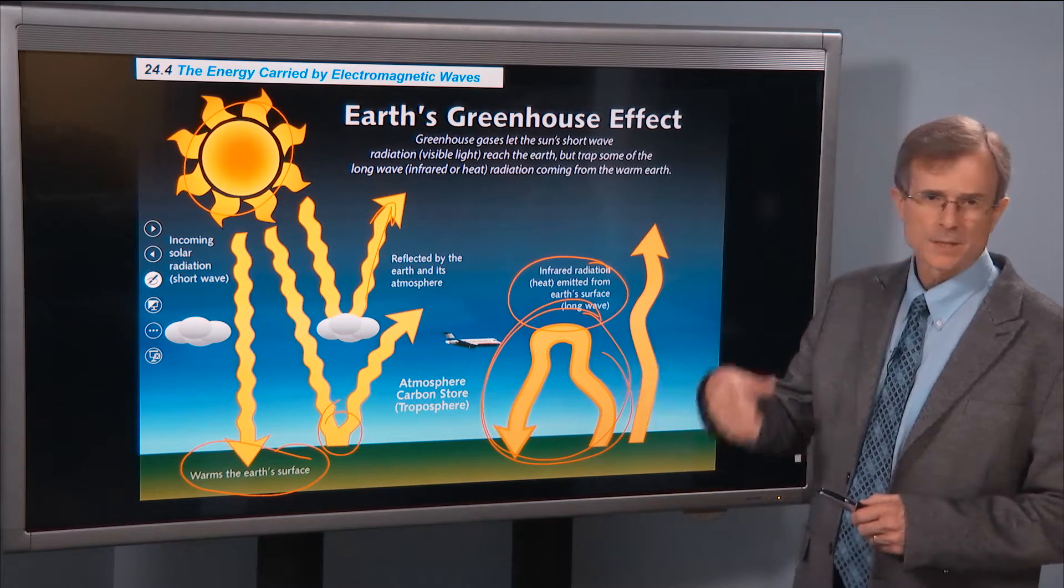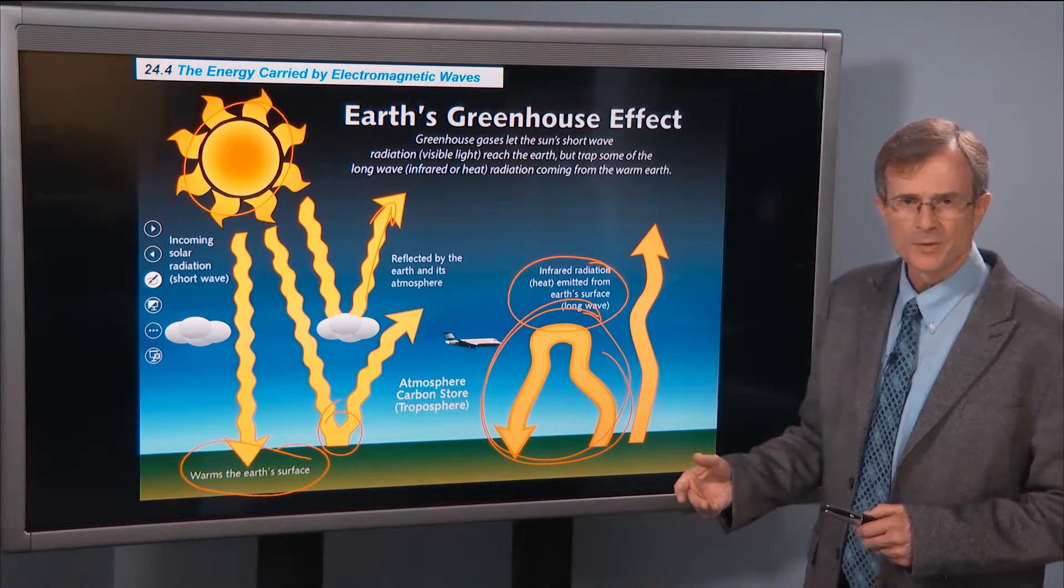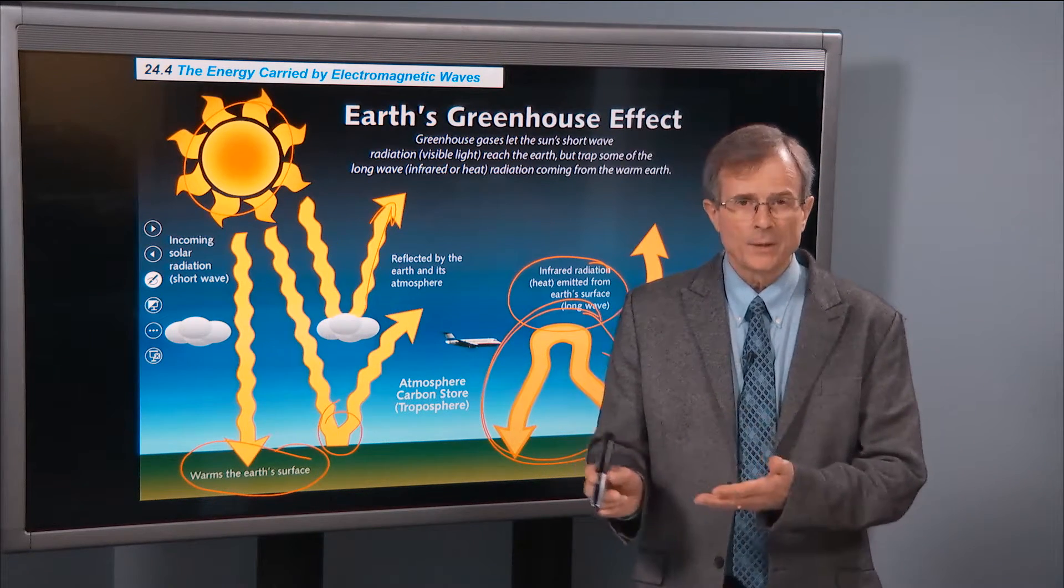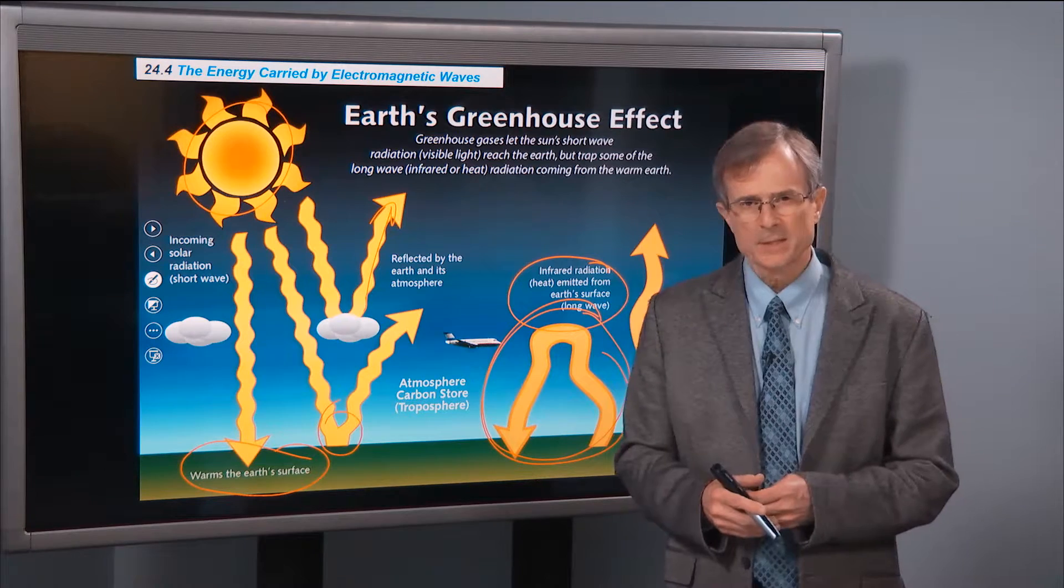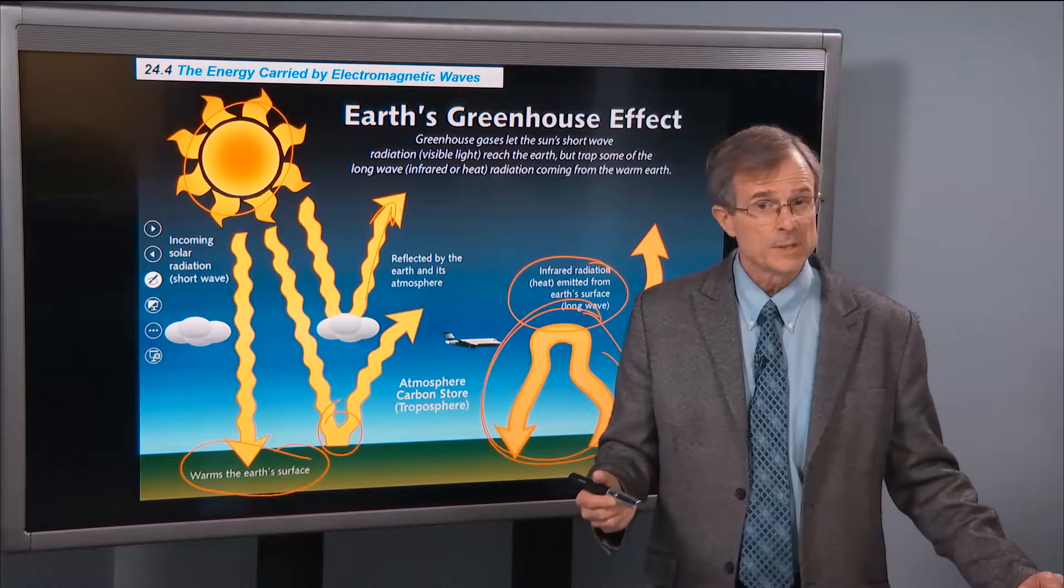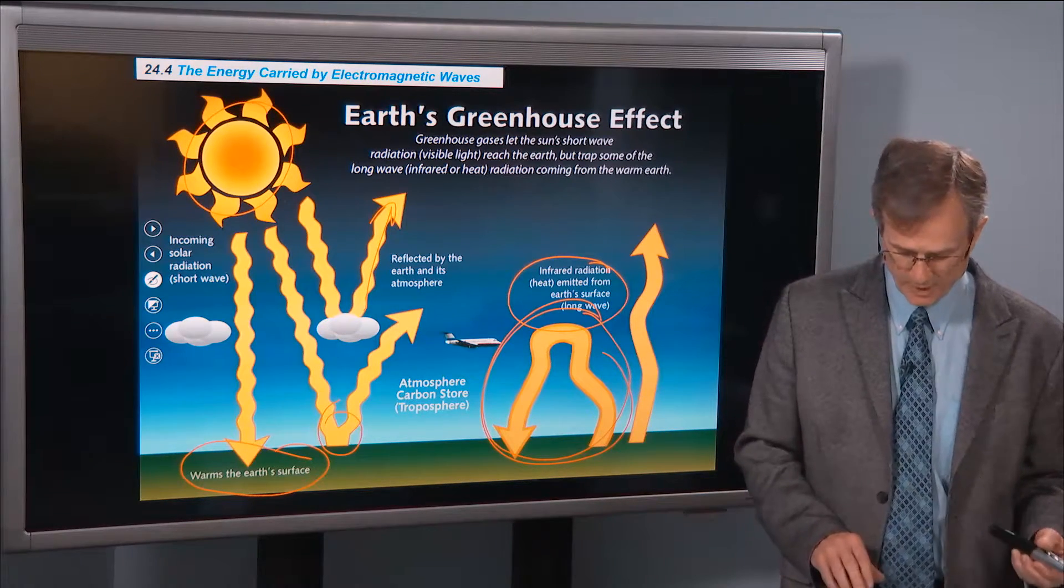The more carbon dioxide and water vapor there is in our atmosphere, the greater the greenhouse effect. Venus has a runaway greenhouse effect, and is, in fact, even though it's farther from the Earth, it's hotter than Mercury is. And the reason is a runaway greenhouse effect.